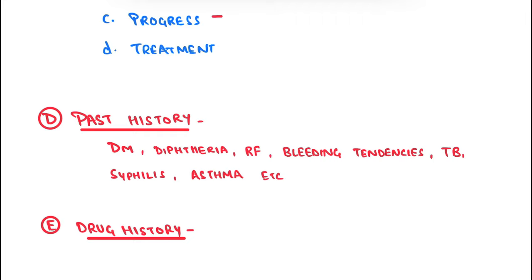Now ask about past history, because certain past diseases can progress in severity. Important diseases to inquire about include: diabetes mellitus, history of diphtheria, rheumatic fever, bleeding tendencies, tuberculosis, syphilis, and jaundice, among others.